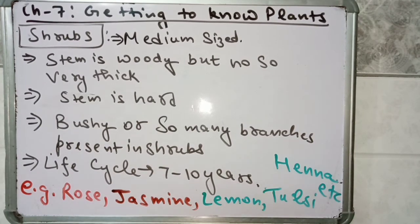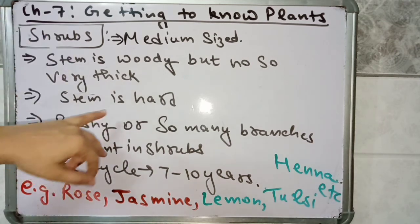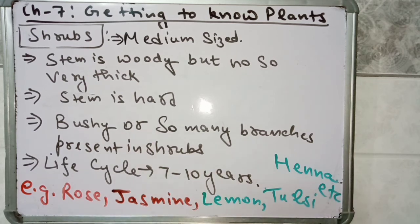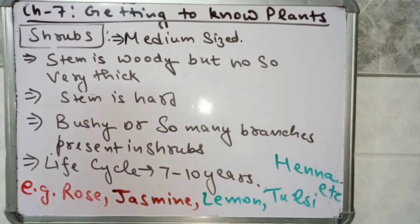Let's recall the properties of shrub plants. First, they are medium sized plants — if a plant in the playground is slightly taller than you, it might be a shrub. Second, its stem is woody but not so very thick; shrubs have thin but woody stems, not green in color, and the stem is hard, not soft like herbs. Third, shrubs are bushy, meaning so many branches are present. Their life cycle is 7 to 10 years, whereas herbs have a lifespan of approximately one year. Examples are rose, jasmine, lemon, tulsi, and henna.